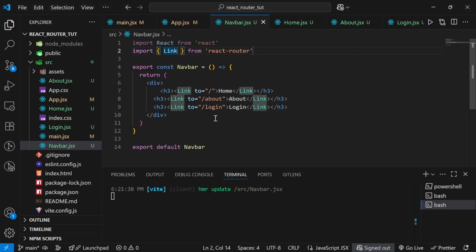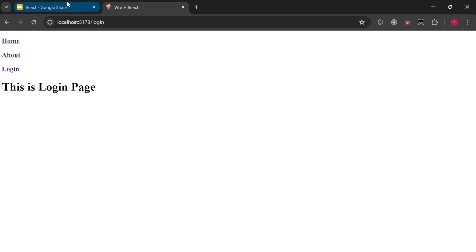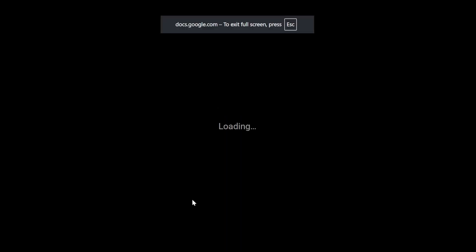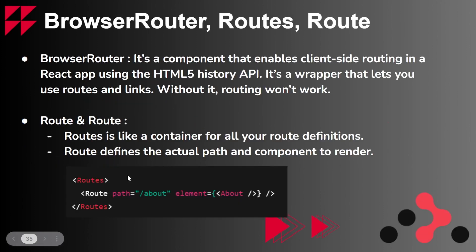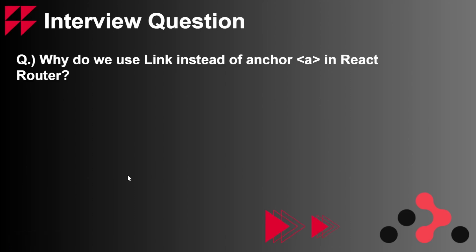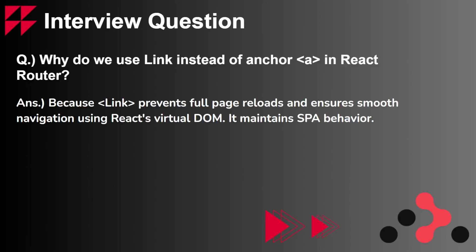In this one video we have learned a lot. We understood BrowserRouter, we saw what Routes and Route are, we understood the Link component, we set up basic routing for three pages — Home, About, and Login — and we created a separate Navbar file for links. Now it's time for an interview question: why do we use Link instead of anchor tags in React Router?